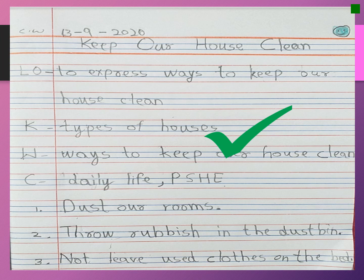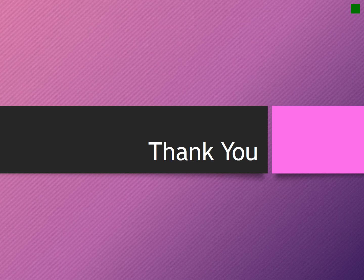So no matter if your house is big or small, you should always keep your house clean. In your notebook, write the topic 'Keep Our House Clean' and write how you are going to keep your house clean — dust our rooms, throw rubbish in the dustbin, not leave used clothes on the bed. So that is the end of the lesson. We learnt why we need a house, the types of houses, houses with different roofs, and how to keep our house clean. Watch again and revise the lesson.